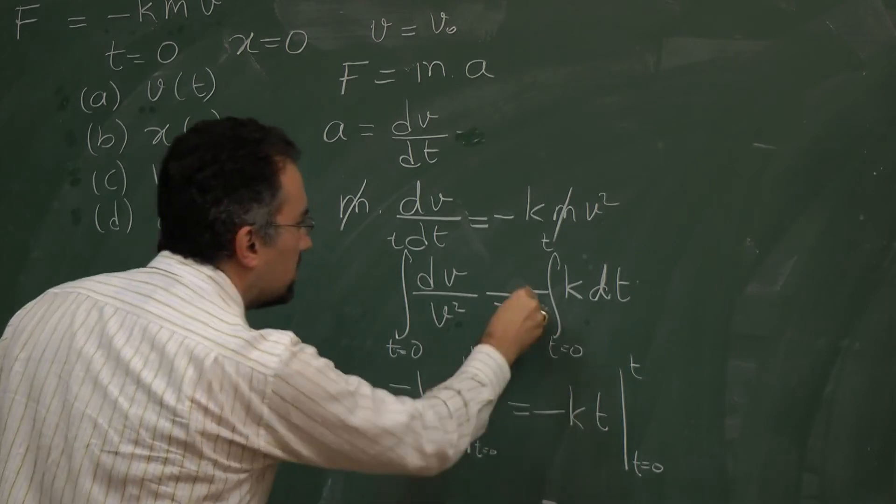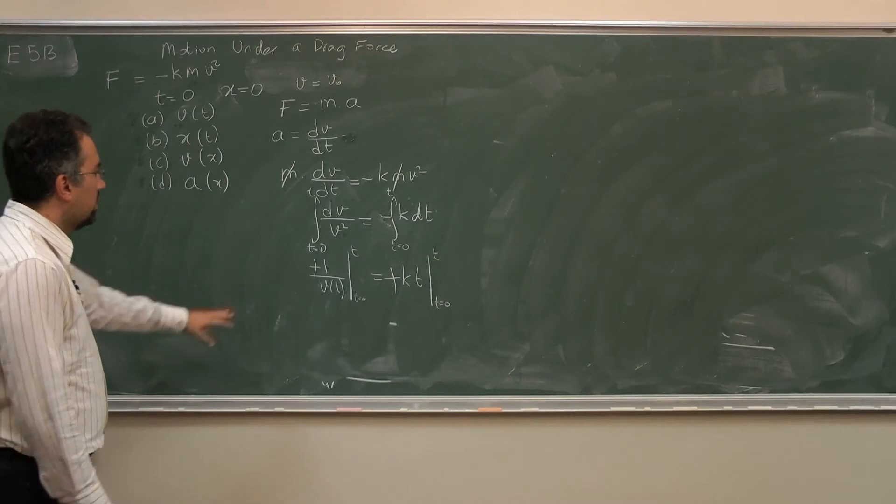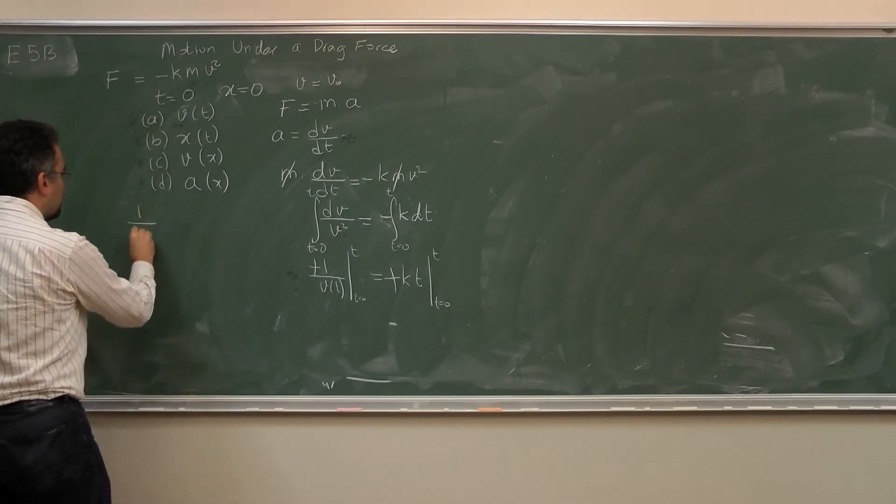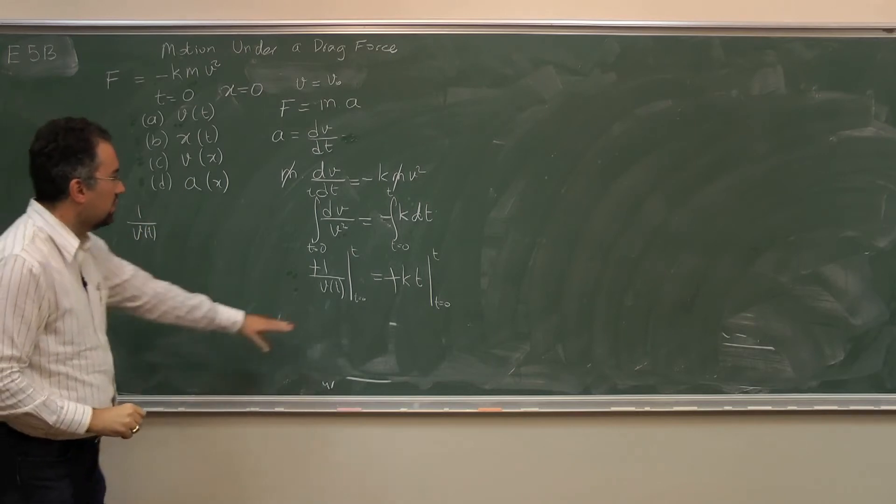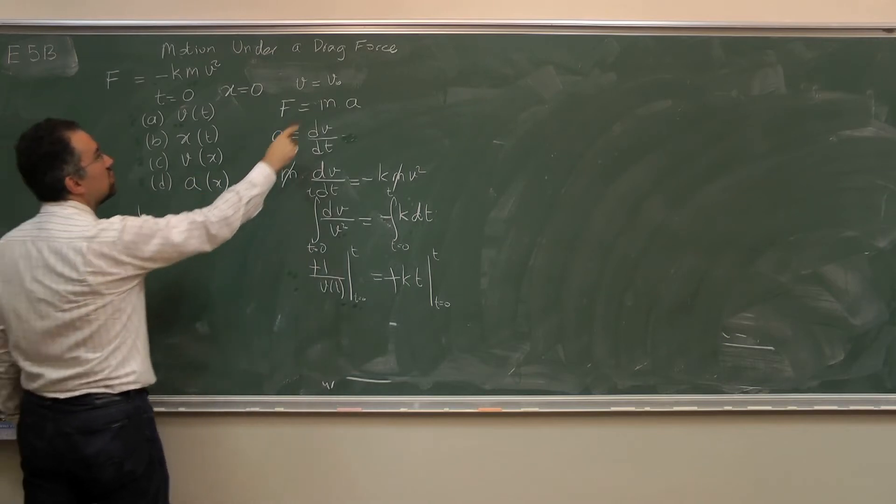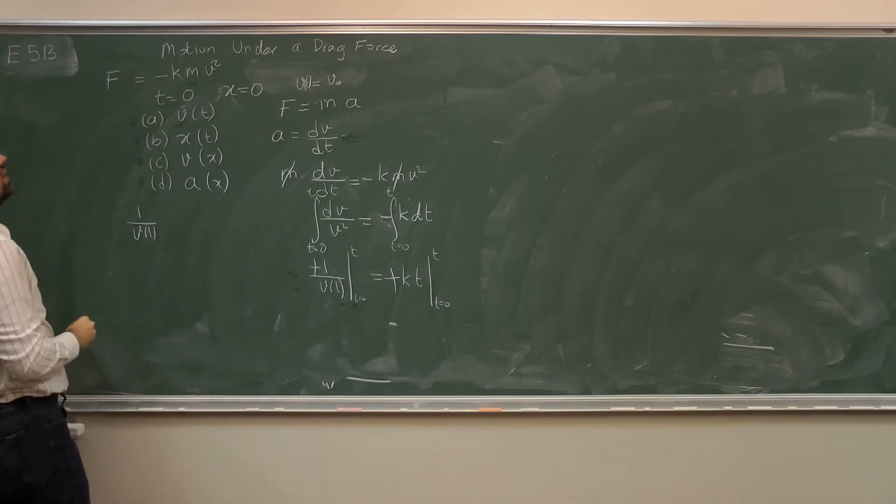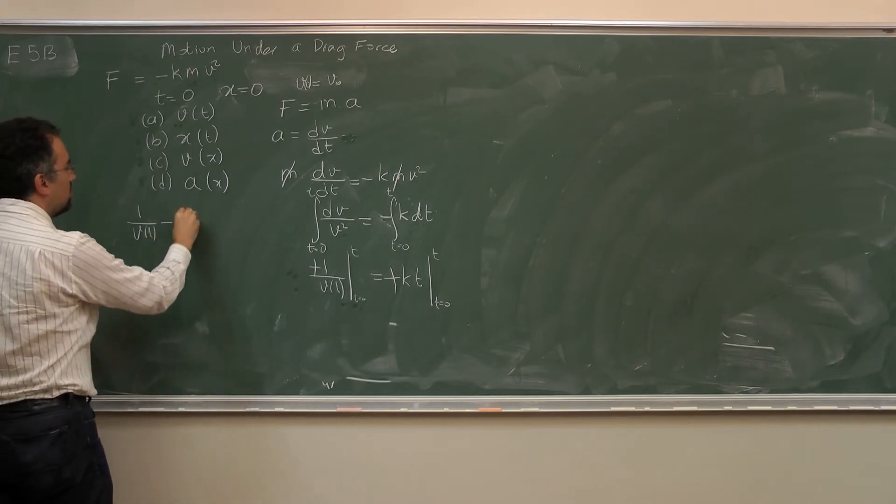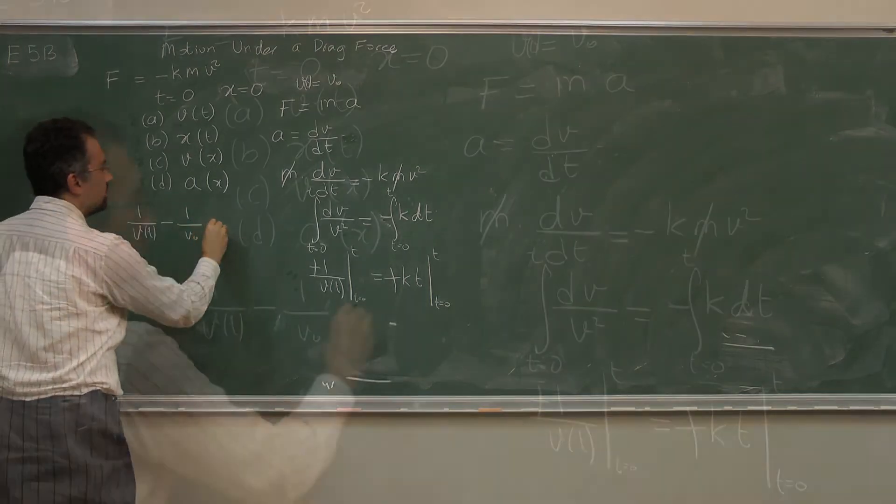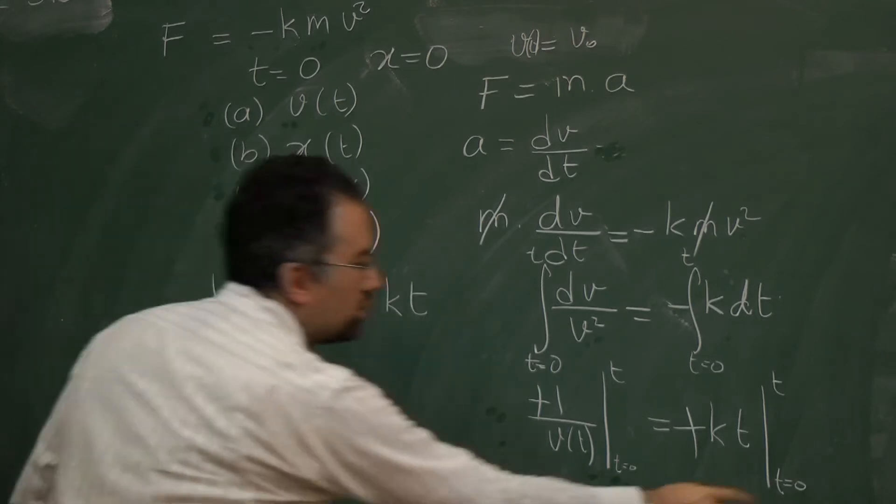The integral of dv over v squared is just 1 over v. So I have 1 over v of t evaluated from t equals 0 to t. The minus signs go away. If I evaluate both sides I get 1 over v of t at time t, and I must subtract the value at t equals 0 which is v0. So I have minus 1 over v0 equals k t.